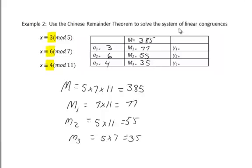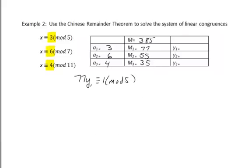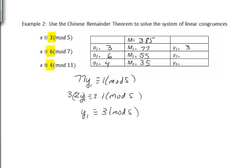To find y1, we solve 77y1 congruent to 1 mod 5. Reducing 77 mod 5 gives 2y1 congruent to 1 mod 5. Since 2 times 3 is 6, which is congruent to 1 mod 5, the inverse of 2 mod 5 is 3. Multiplying both sides by 3 gives 6y1 congruent to 3, so y1 is congruent to 3 mod 5. We fill that into the table.